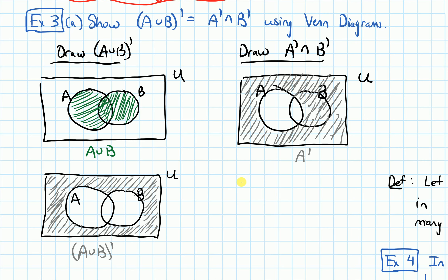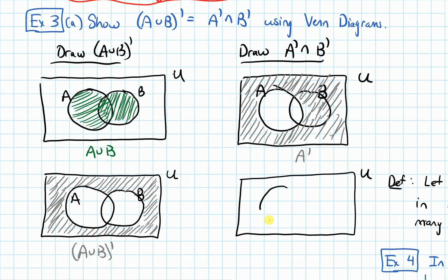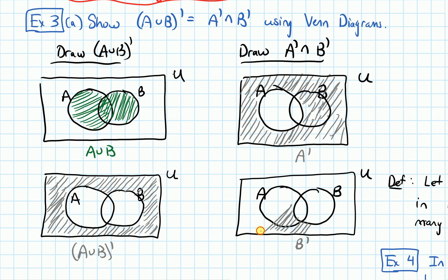Now let's draw another Venn diagram with my universal set U and my two circles for A and B. This time I'm going to shade in B complement — the stuff that's not in B, that's outside of B. So let's shade in all the stuff that is outside of B. That is B complement.